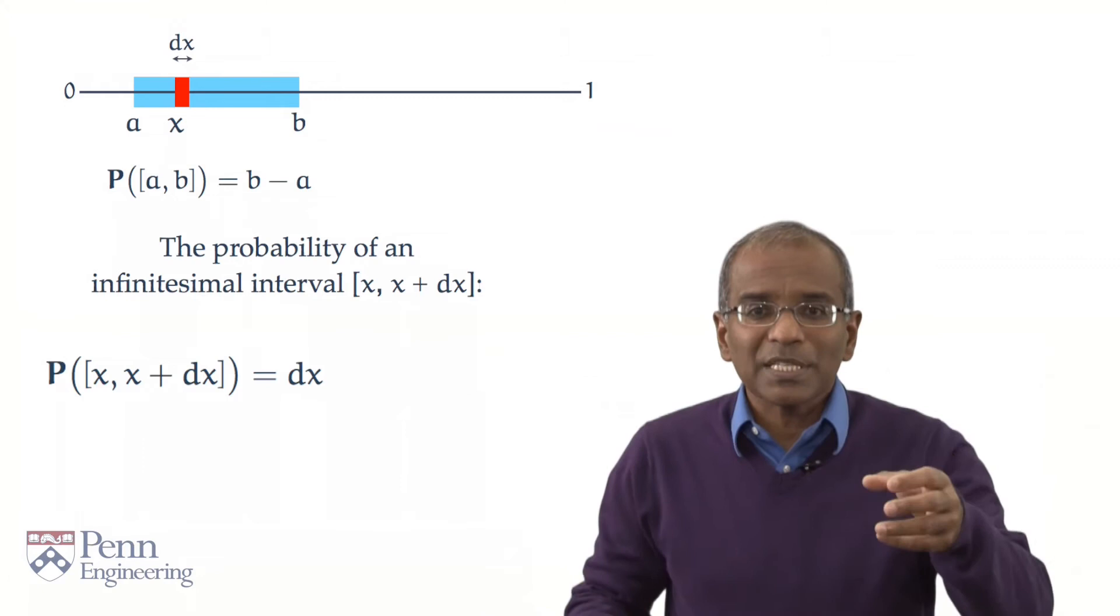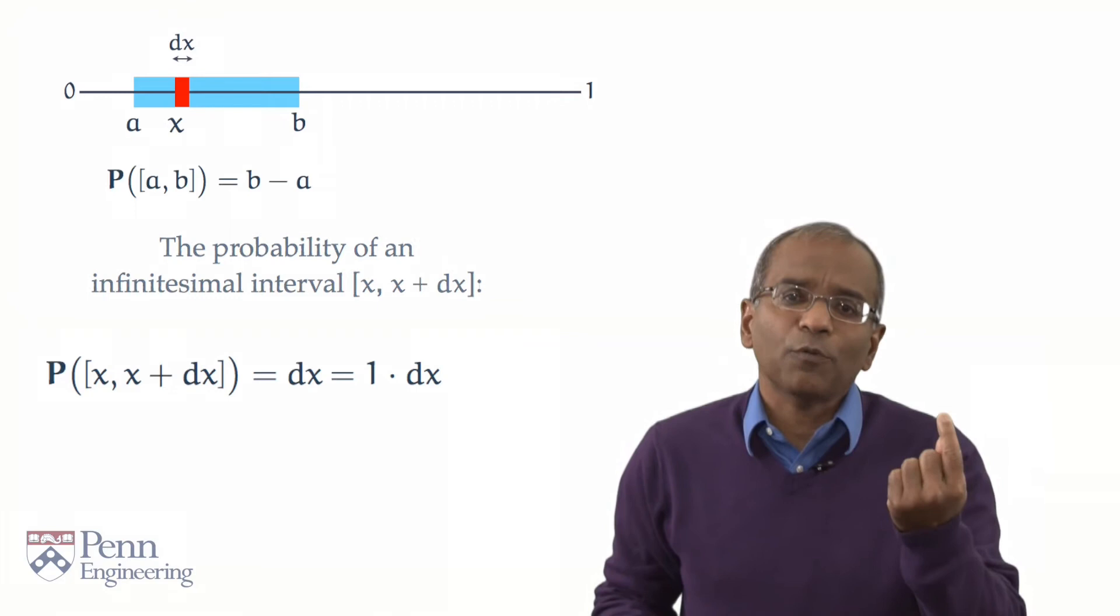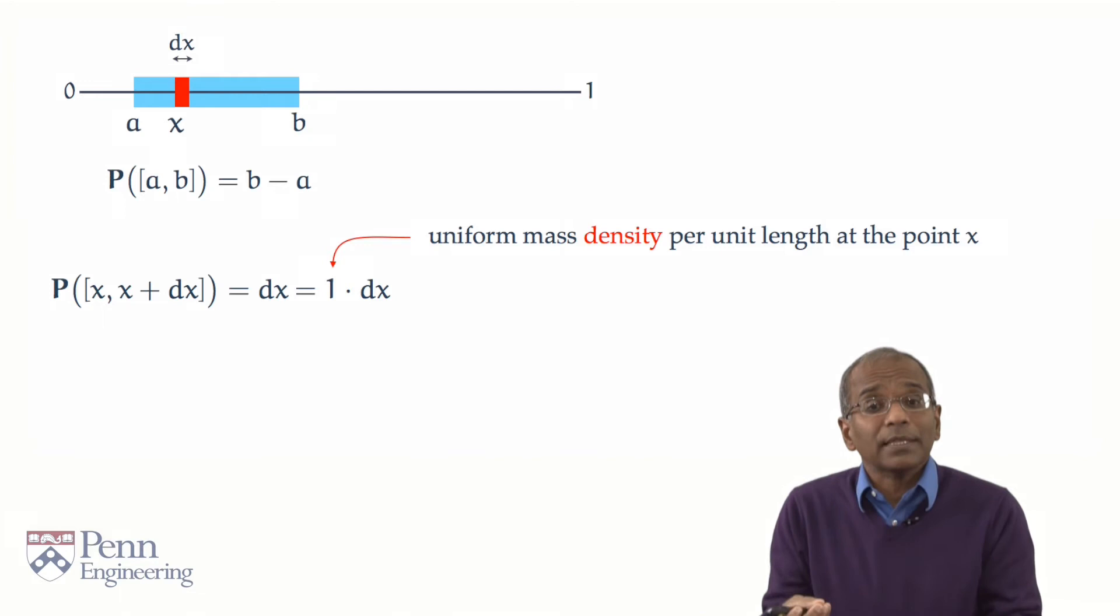Now suppose we rewrite dx as 1 times dx. dx again is going to represent length. 1 must then per force represent a mass per unit length. And this mass per unit length is uniform everywhere in the interval. Of course, we're going to multiply this mass per unit length by a unit of length. And together, we obtain that mass divided by length times length gives you mass.